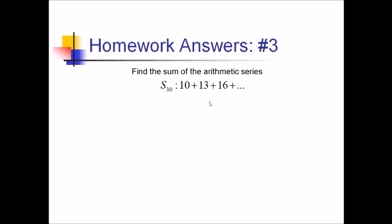For number three, we're trying to find the sum of this arithmetic series. We can start by writing our sum formula, n times T1 plus Tn over 2. But you're going to find very quickly that we're missing a few things. We know n is 30. T1 is 10. But what's Tn? We do not know the 30th term for this, so we're going to have to find it.